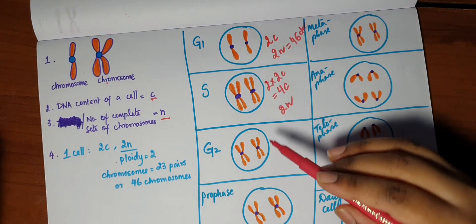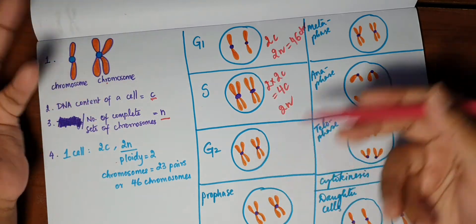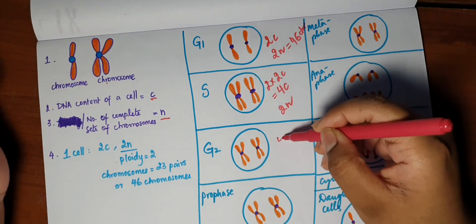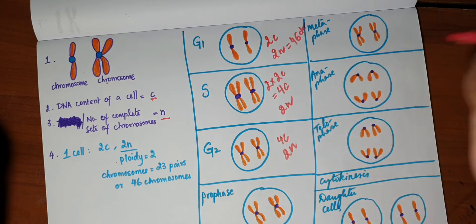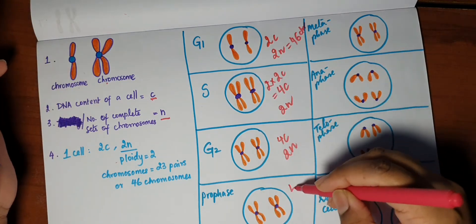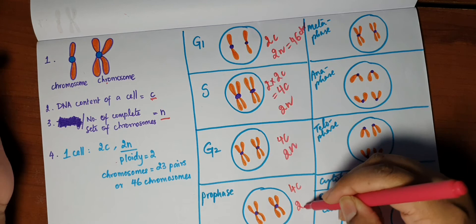In G2, nothing significant happens with regards to the DNA, so it's still 4c and 2n. In prophase, no significant changes, so 4c and 2n.